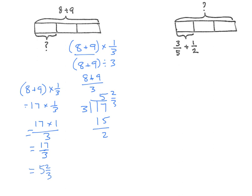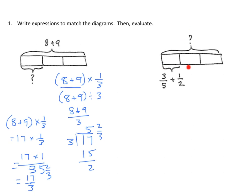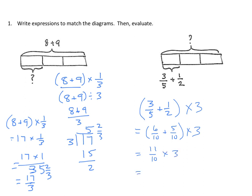Let's look at the second expression. We don't know the whole in this case, but we know the part. We have the sum of 3 fifths plus 1 half, and we need that 3 times. So the expression is (3 fifths + 1 half) times 3. We evaluate inside the parentheses first. The common denominator is 10: 3 fifths is 6 tenths, 1 half is 5 tenths. The sum is 11 tenths times 3, which equals 33 tenths, or 3 and 3 tenths.